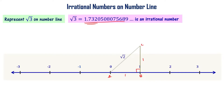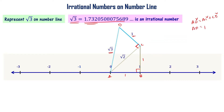We already have AC = √2 units from the previous construction. Now draw a perpendicular line to AC at point C, with length CD = 1 unit. In triangle ACD, by the Pythagorean theorem: AD² = AC² + CD² = (√2)² + 1² = 2 + 1 = 3. Therefore AD = √3 units.